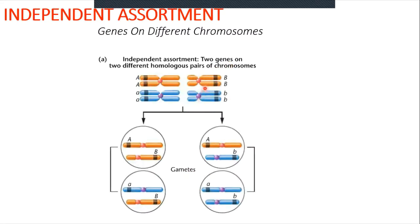Let's look at examples starting from the beginning. If two genes are on separate chromosomes, we hypothesize an organism with two chromosomes. Since this is a diploid organism, our individual has two copies of each chromosome — one copy of chromosome one, a second copy of chromosome one, one copy of chromosome two, and a second copy of chromosome two.